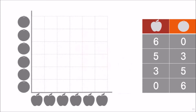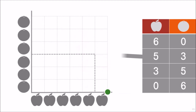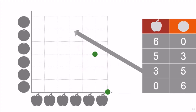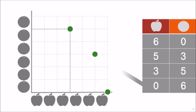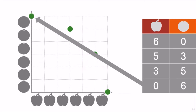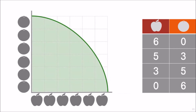Let us now plot all of those production possibilities: six apples and no oranges; five apples and three oranges; three apples and five oranges; and finally, no apples and six oranges. If we connect the dots, we see that the production possibilities frontier now has a different shape — instead of being a straight line, it is concave to the origin.